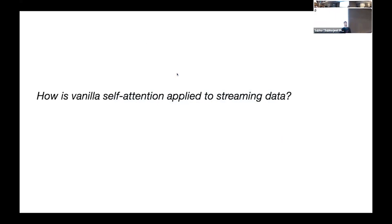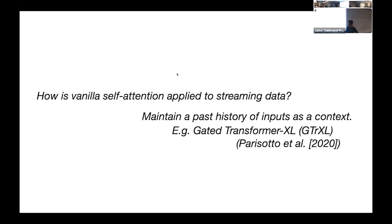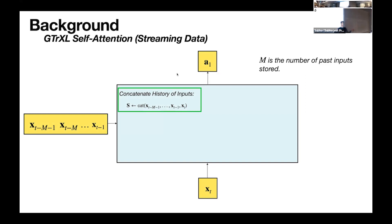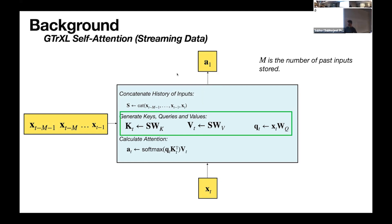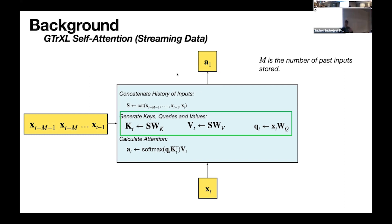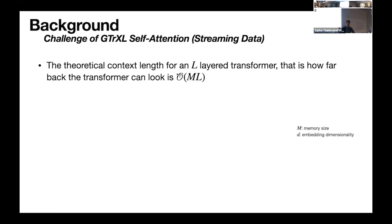If we want to extend this to a streaming case where input comes in one at a time, there is an approach called the Gated Transformer-XL. The idea is simple: we maintain the history of the past M inputs. When a new input arrives at time step T, we concatenate it with the past M inputs to form a matrix, then apply the same operations — generate queries, keys, values, and calculate attention.